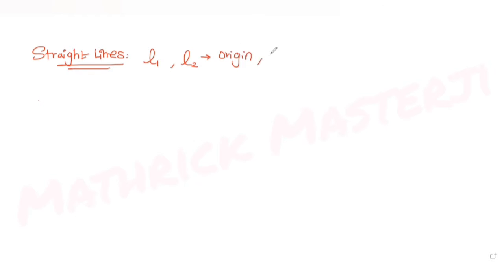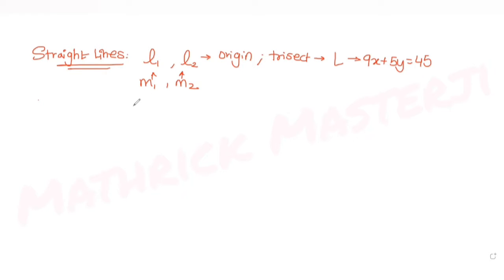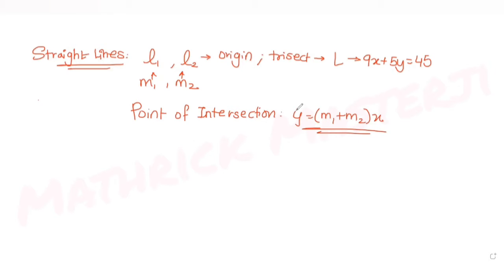Today's question is from the topic of straight lines. There are two lines L1 and L2, both passing through the origin, and they trisect the line segment of line L given by the equation 9x + 5y = 45 between the axes. If m1 and m2 are the slopes of L1 and L2, we need to find the point of intersection of line L with the line y = (m1 + m2)x.